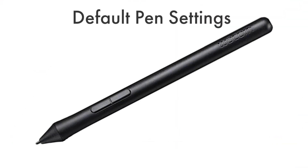On the pen are two buttons. The button closest to the tip is the scroll button. You can click and hold this button down and then place the pen tip on the tablet's surface and drag up or down to scroll through a document, website, or other window.